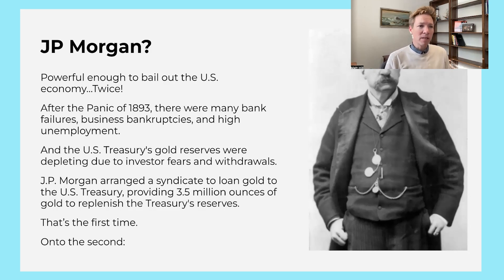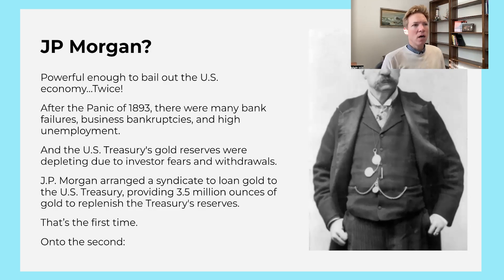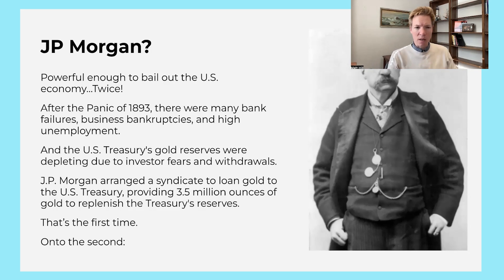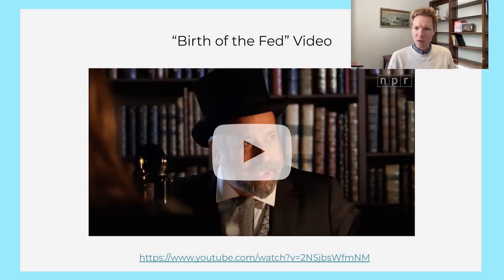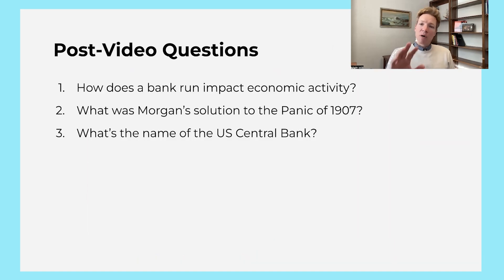He basically saved the economy twice. In the panic of 1893, he basically arranged gold reserves to stay in the U.S. — they were about to leave. If your country's on the gold standard and all the gold leaves, the currency and the economy is going to collapse. So he arranged to keep the gold in the U.S. And then we go on to the second time that he bailed out the economy, which is covered in this fun video from NPR Planet Money on the birth of the Fed. So you play the video — it's a fun video reenacting the panic of 1907 and what J.P. Morgan did.